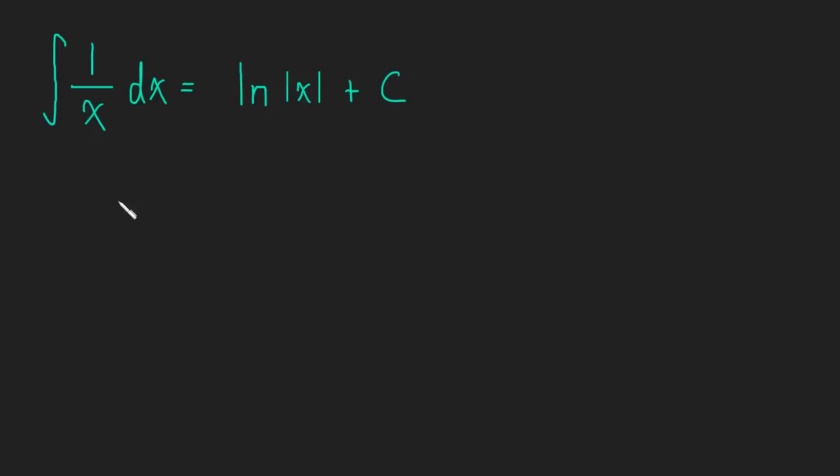And the only reason we need the absolute value is because the log of a negative number is undefined. Also the log of 0 is undefined, but we don't have to worry about that because we know there's not going to be a 0 in the denominator.